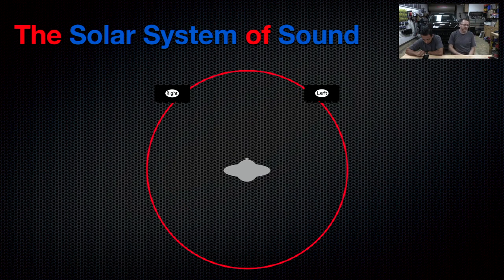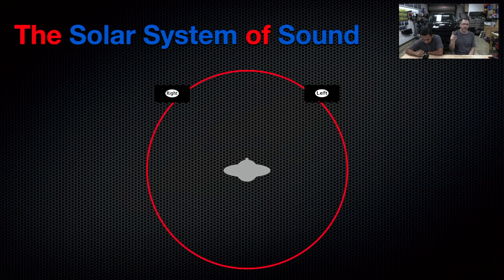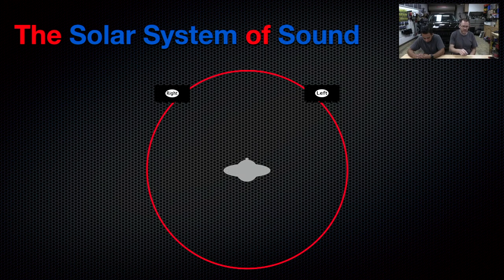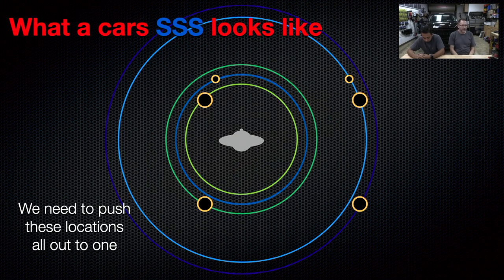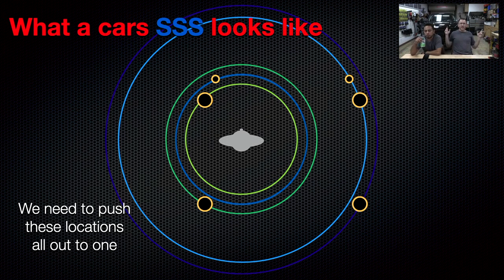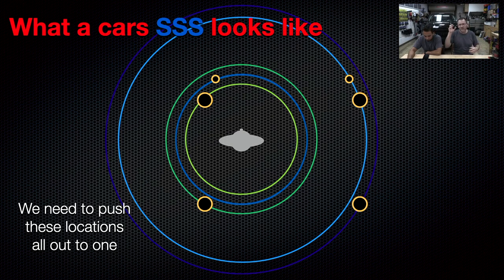This creates what's called the solar system of sound, where you yourself are the sun and we only want one planet to surround us. You could be the earth with one moon. Sound — you're the main focus and we want one planet to circle us. The problem we run into in a car is that the solar system of sound looks like our actual solar system, where you're the sun and you have all these planets at all different distances circling around your head and creating all kinds of havoc. That's why it sounds like there's sound coming out of the left and sound coming out of the right.